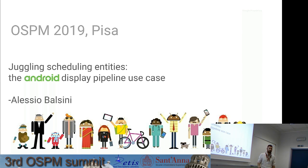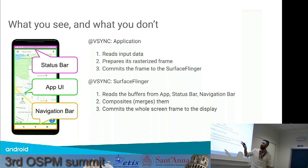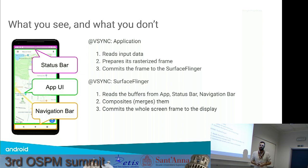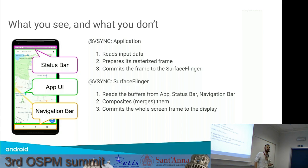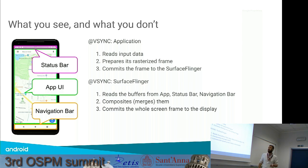On your smartphone, you can see basically three different components. On top, you have a status bar. In the center, you usually see an application UI when it's not shown as full screen. And on the bottom, you see a navigation bar where no physical buttons are available.